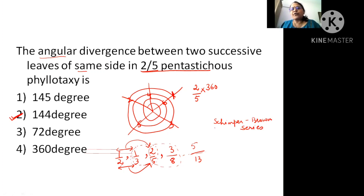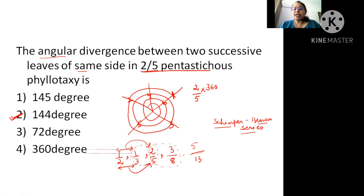Alternate phyllotaxy as studied in NCERT indicates that every time the third leaf is on top of the first. But in nature, it can be the fourth leaf on top of the first, or the sixth leaf, or even the ninth leaf on top of the first — it all depends on how many circles have been taken.